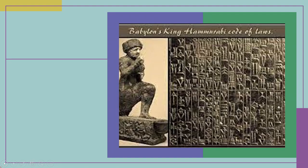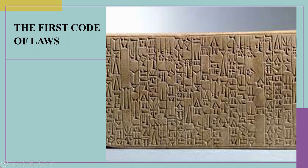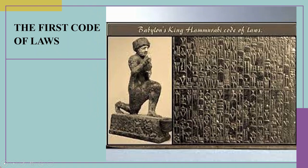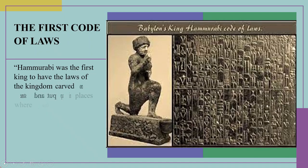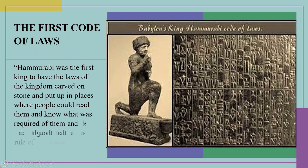Here is the 1st Code of Laws. Hammurabi was the 6th Babylonian king. Babylonia was a place that existed in West Asia almost 5000 years ago. At that time part of this region was called Mesopotamia and another part was called Sumer. Hammurabi was the first king to have the laws of the kingdom carved on stone and put up in places where people could read them and know what was required of them.